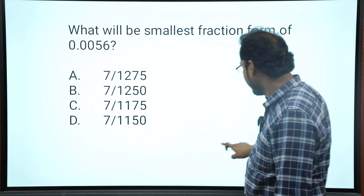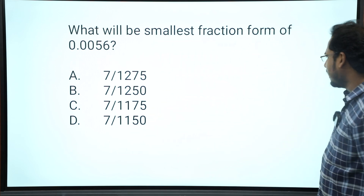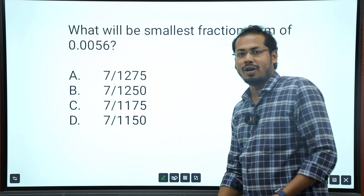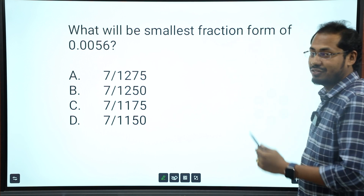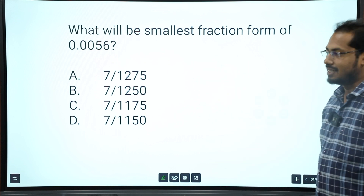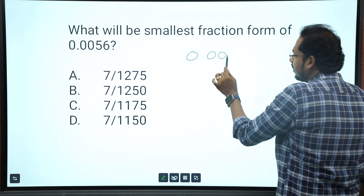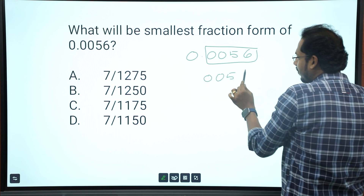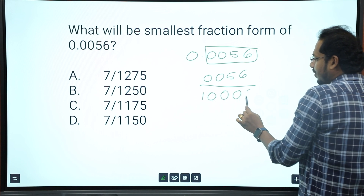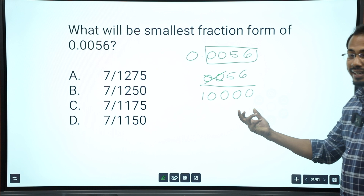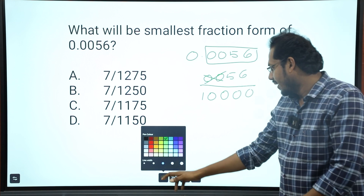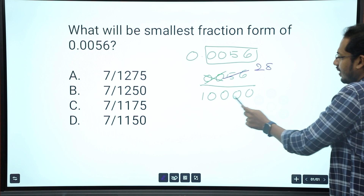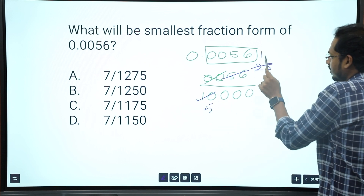Next question: what will be the smallest fraction form of 0.0056? We need to convert this into fraction format. 0.0056 — there are 4 decimal places, so the denominator is 10,000. That gives us 56 over 10,000. Simplify by halving: 28 over 5,000, then 14 over 2,500, and so on until you get the simplest form.